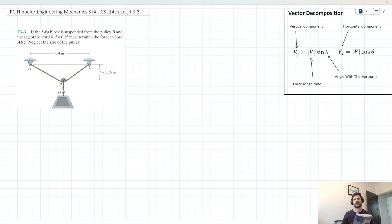Hello and welcome to this video tutorial for R.C. Hibbler's Engineering Mechanics Statics textbook. We have this problem from chapter 3 asking: if the 5kg block is suspended from pulley B and the sag of the chord is 0.15m, determine the force in chord ABC, neglecting the size of the pulley.